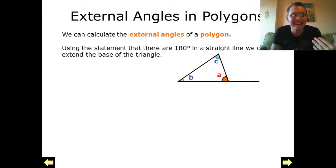When we are talking about an external angle, we are talking about an angle external to the interior angle. Here we've got a triangle, and what we're going to do is extend the line out of the base here to create the external angle to angle A.